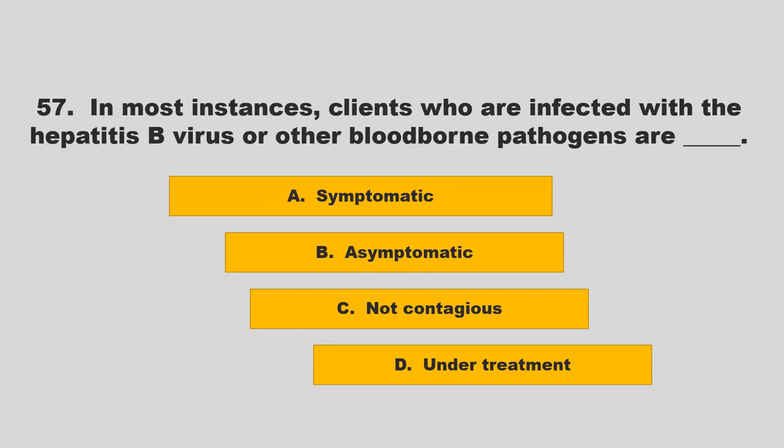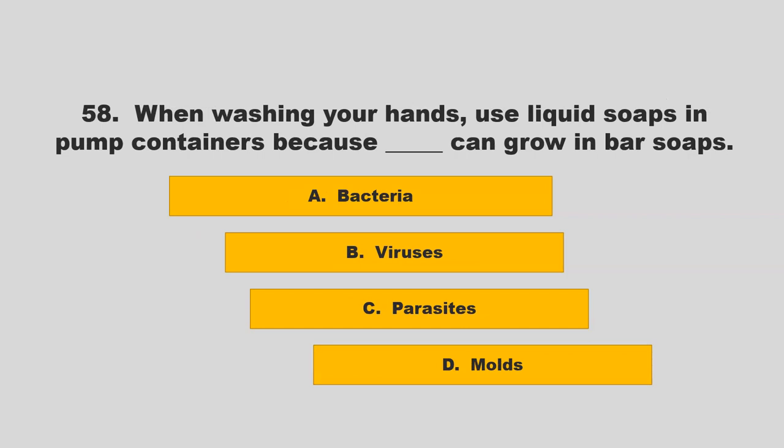In most instances, clients who are infected with the hepatitis B virus or other bloodborne pathogens are blank. Options: symptomatic, asymptomatic, not contagious, or under treatment. The correct answer is B: asymptomatic.